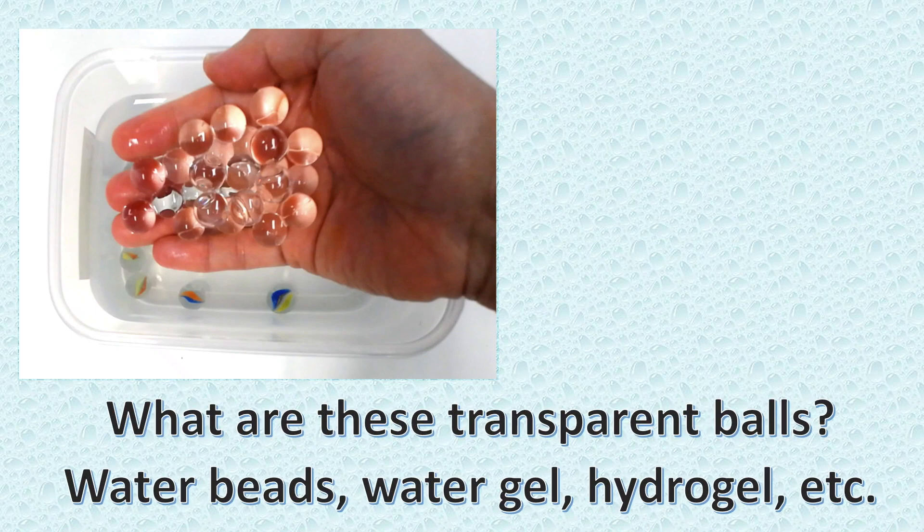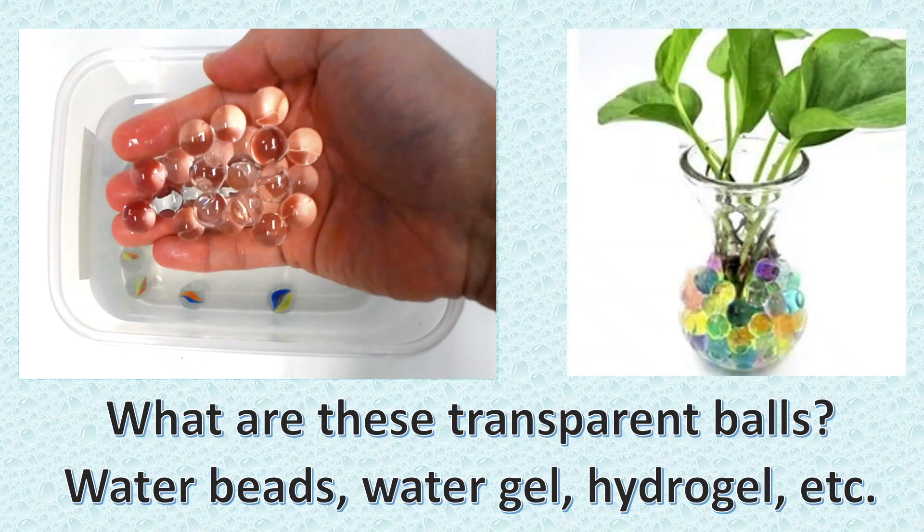They are often called water beads, water gel or hydrogel, which are commonly used for growing plants. They are actually a polymer that can absorb a lot of water.